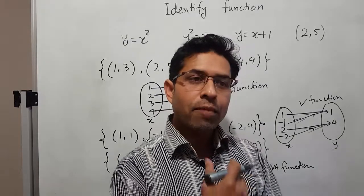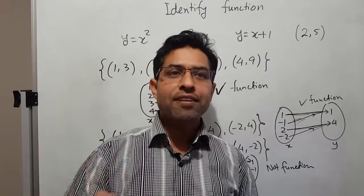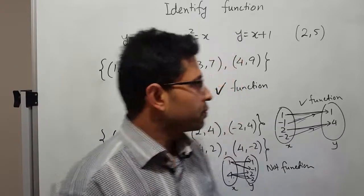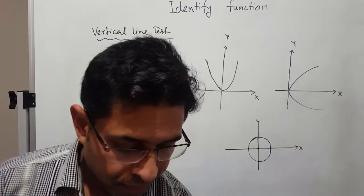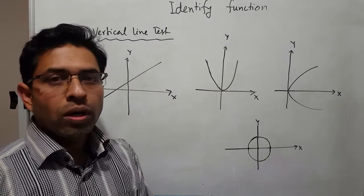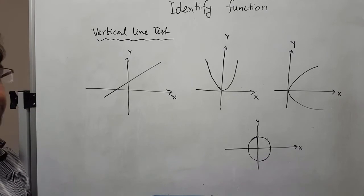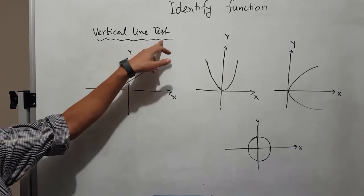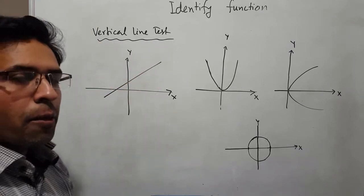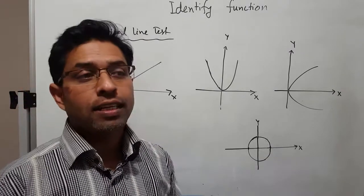Now I'm showing you another method of identifying a function. If the question already gives you a graph, how do you identify whether that graph is a function or not? We can easily identify this by doing the vertical line test. If you make a vertical line on the graph and it intersects only one point, then it is a function.